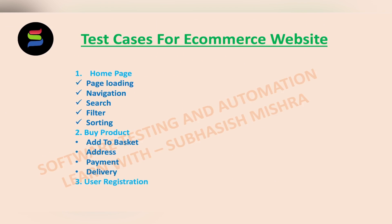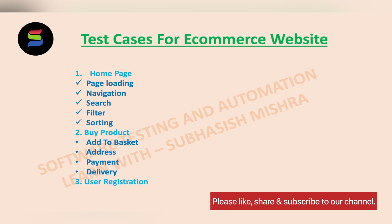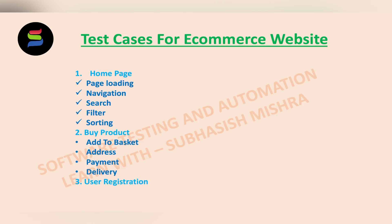We will take an example of the Flipkart website and try to cover all these areas: home page, buy product, and user registration. In the home page section, we'll cover how the page loads, how navigation and registration work, how search functionality works, how filter functionality works, and how sorting functionality works. In the buy product section, we'll see how to add to basket, validate address areas, handle payments, and deliver products.